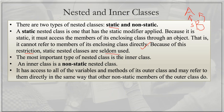The most important type of nested class is the inner class. An inner class is a non-static nested class. It has access to all variables and methods of its outer class and may refer to them directly, including the non-static members of the outer class.